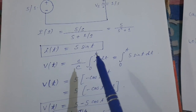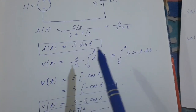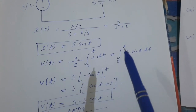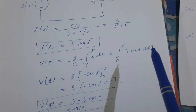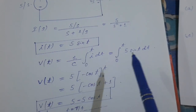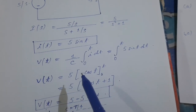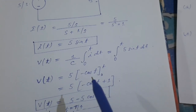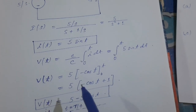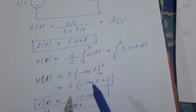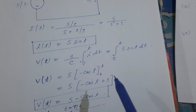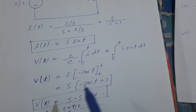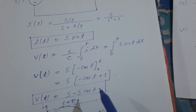The voltage across the capacitor V(t) = (1/C) · ∫₀ᵀ i dt = ∫₀ᵀ 5 sin(t) dt = 5[−cos(t)] from 0 to T = 5(−cos T − (−cos 0)) = 5(−cos T + 1). Therefore, V(t) = 5 − 5 cos(t).